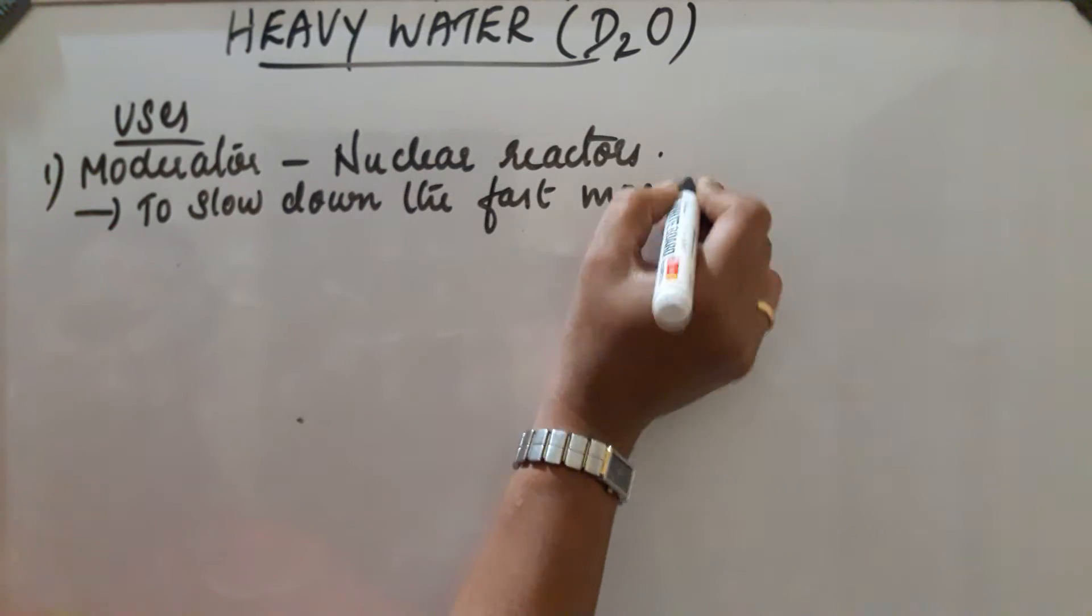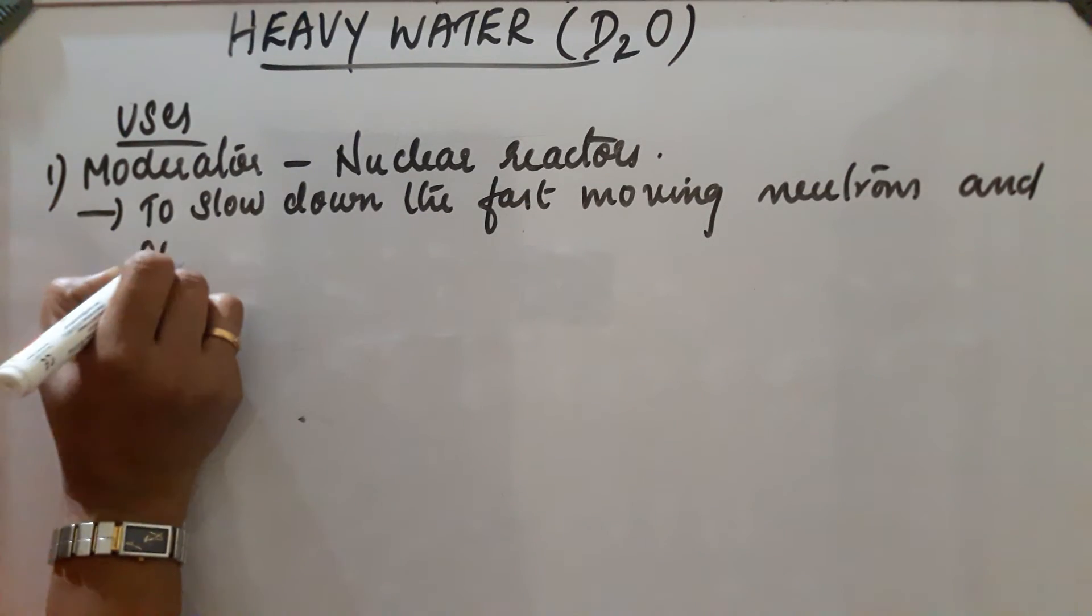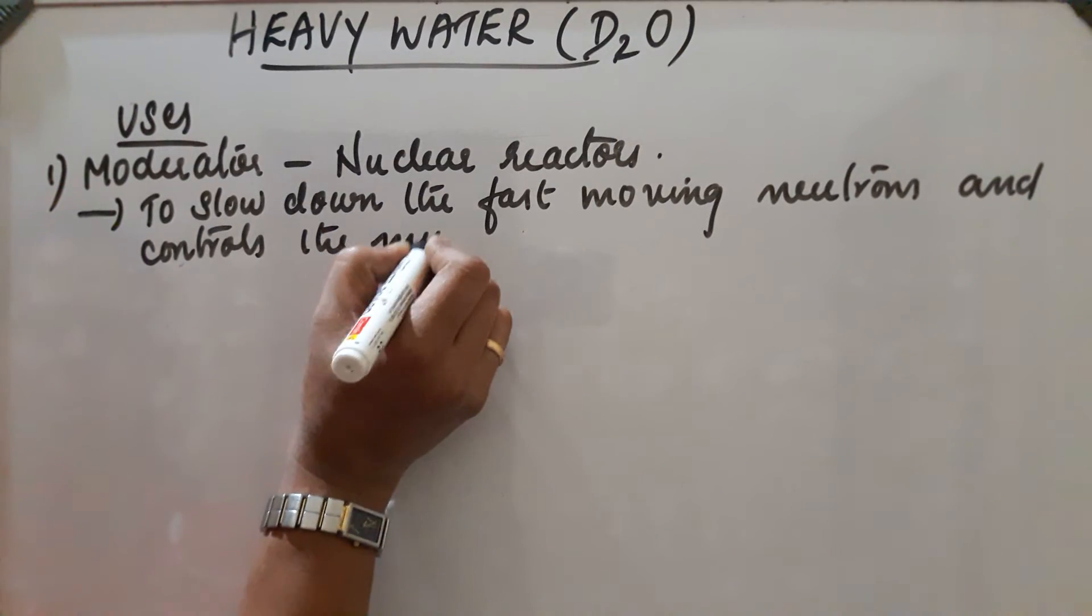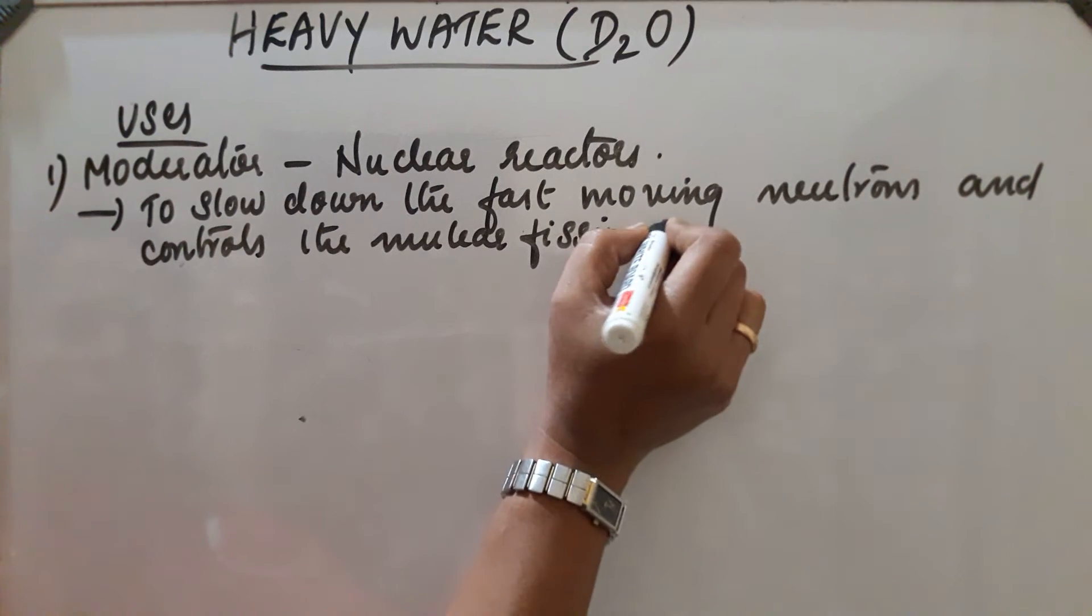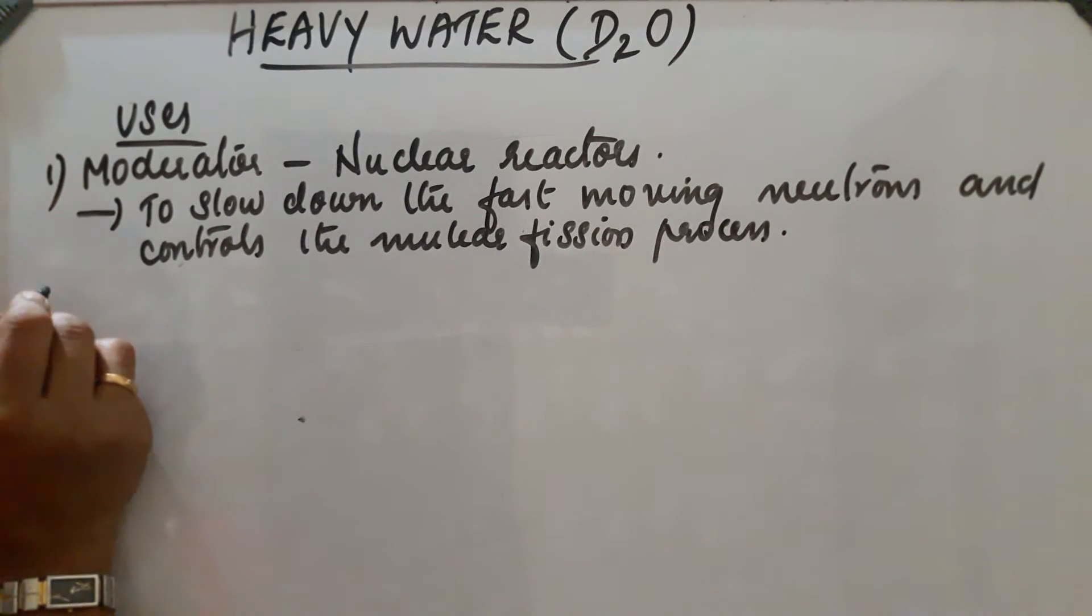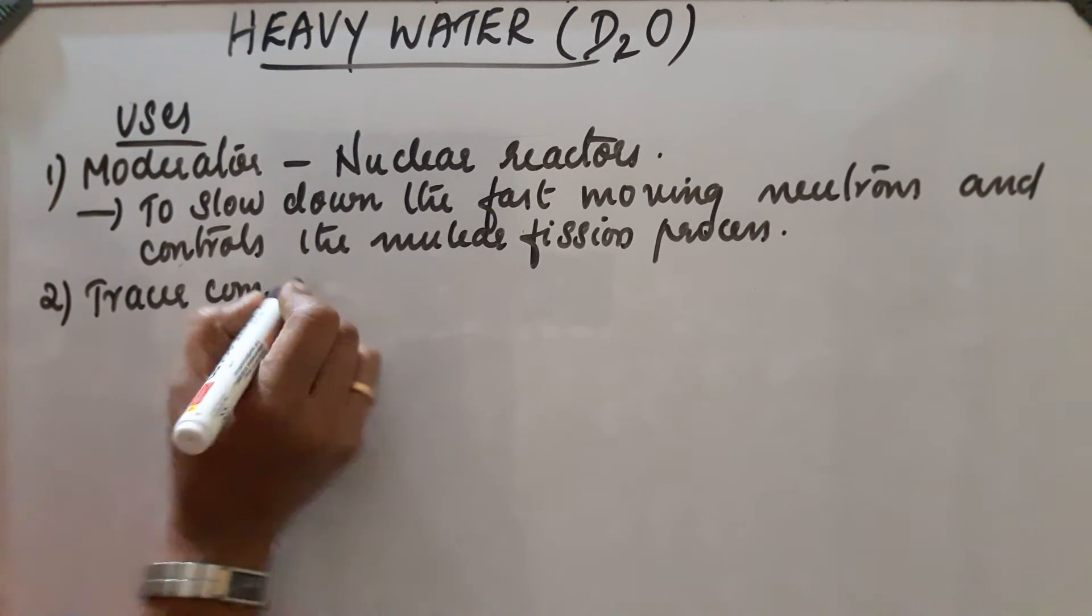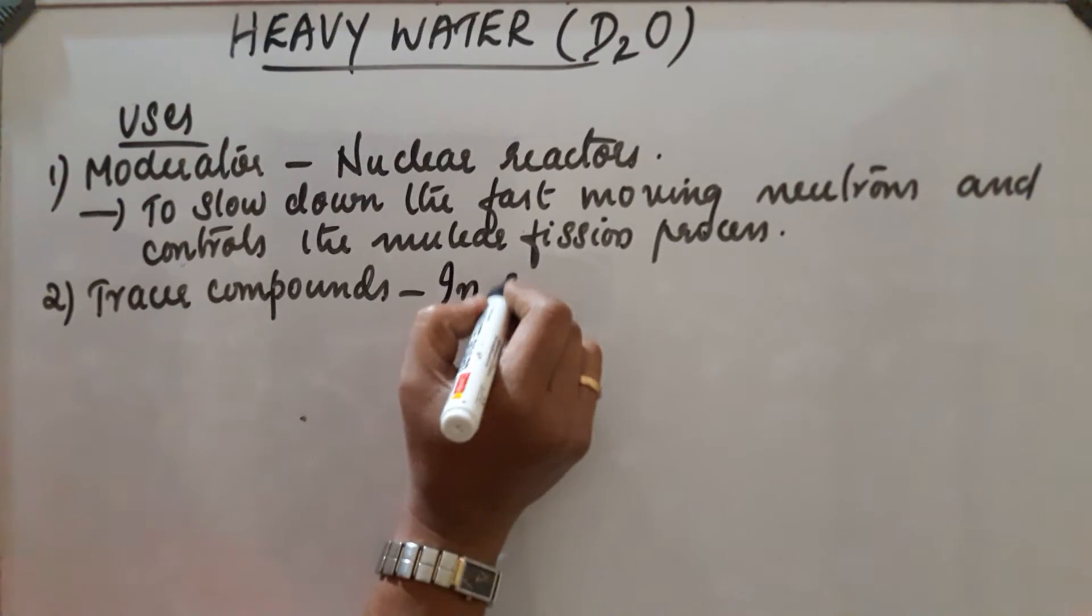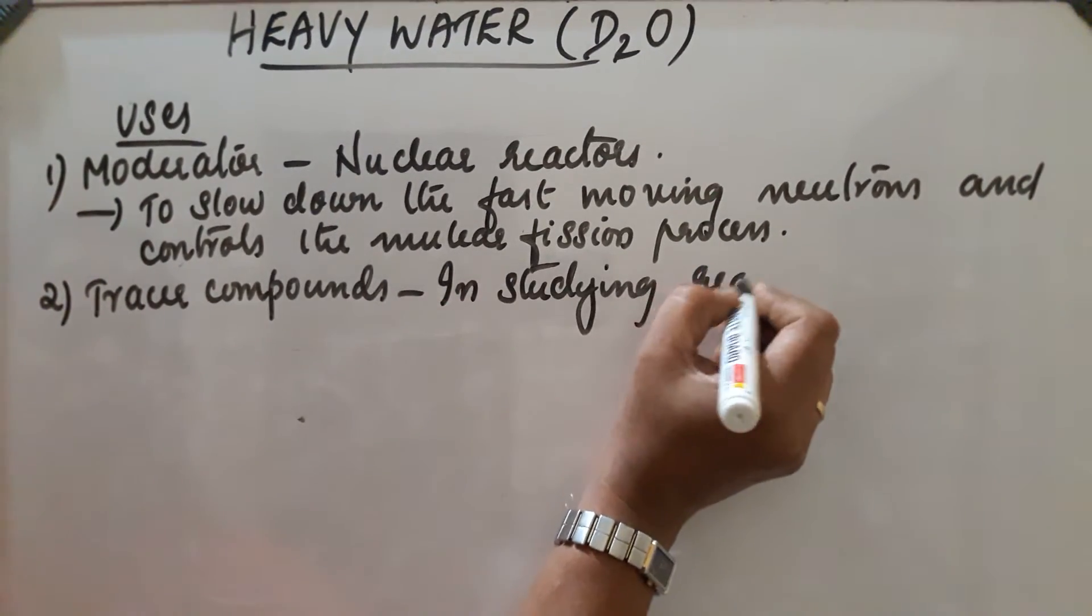The fast moving neutrons are controlled, which manages the nuclear fission process. Next, it is used as tracer compounds in studying reaction mechanisms.